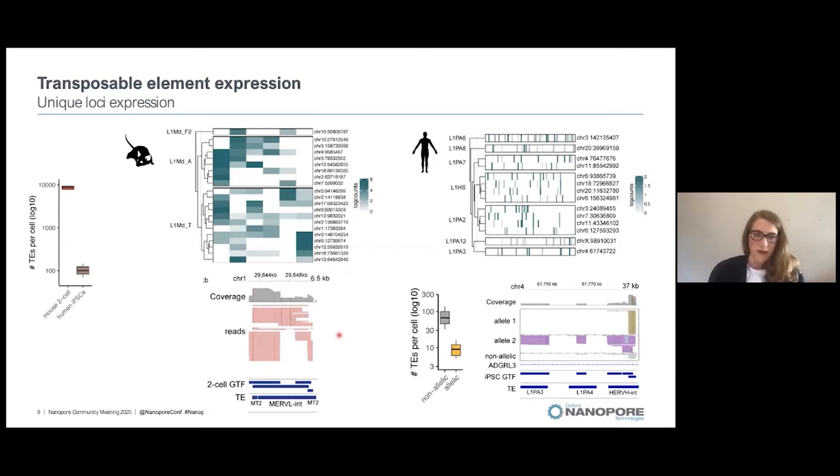In general, you can see that the reads are spanning full-length elements. In this case, it's a MERV-L element, which is 7kb long. If you have single nucleotide polymorphisms present in your transposable element, we can also do allelic transposable element expression at unique loci. We measured 10,000 transposable elements per cell in the mouse 2-cell data and 100 transposable elements per cell in the human IPS cells.